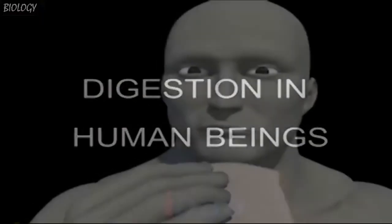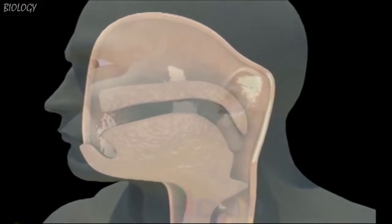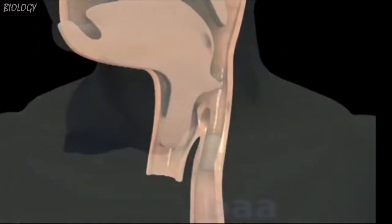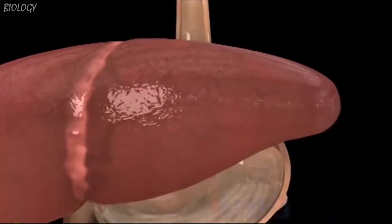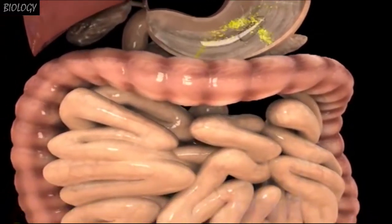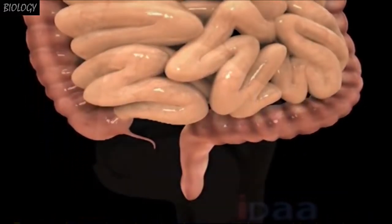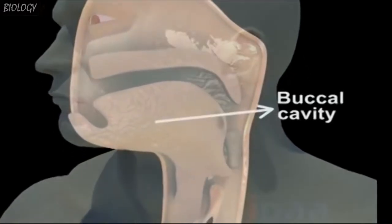Digestion in Human Beings. Human beings take food through the mouth and digest it in specific organs. The undigested food is defecated. The food we take passes through a specific canal which begins with the buccal cavity and ends at the anus. This canal is called the alimentary canal or the digestive tract. Its parts include the buccal cavity,